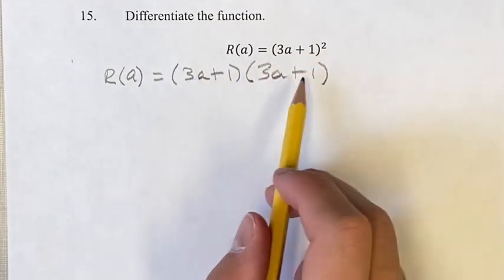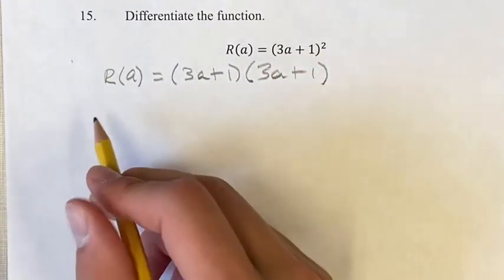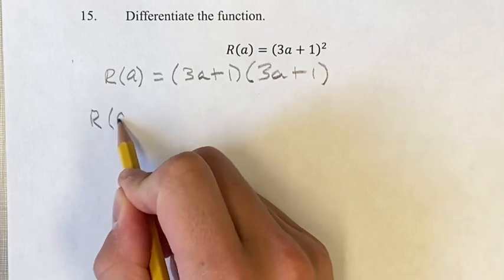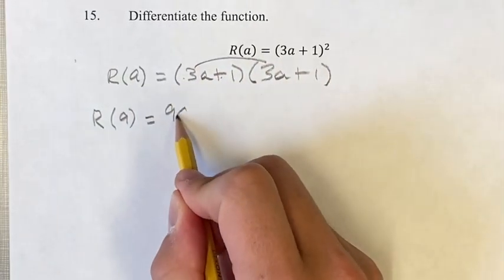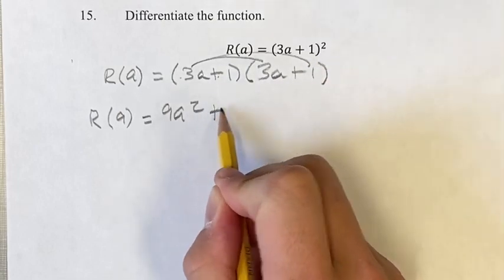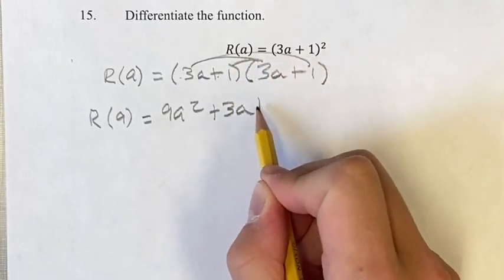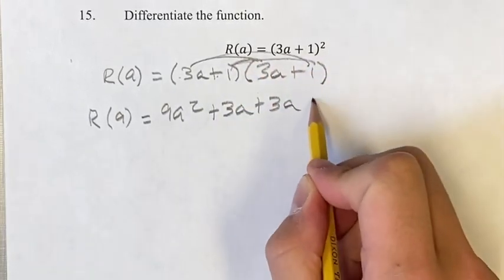So (3a + 1)² is (3a + 1)(3a + 1). Now, we can FOIL it, multiplying each of these by each of these, which gives us 9a² + 3a + 3a + 1.